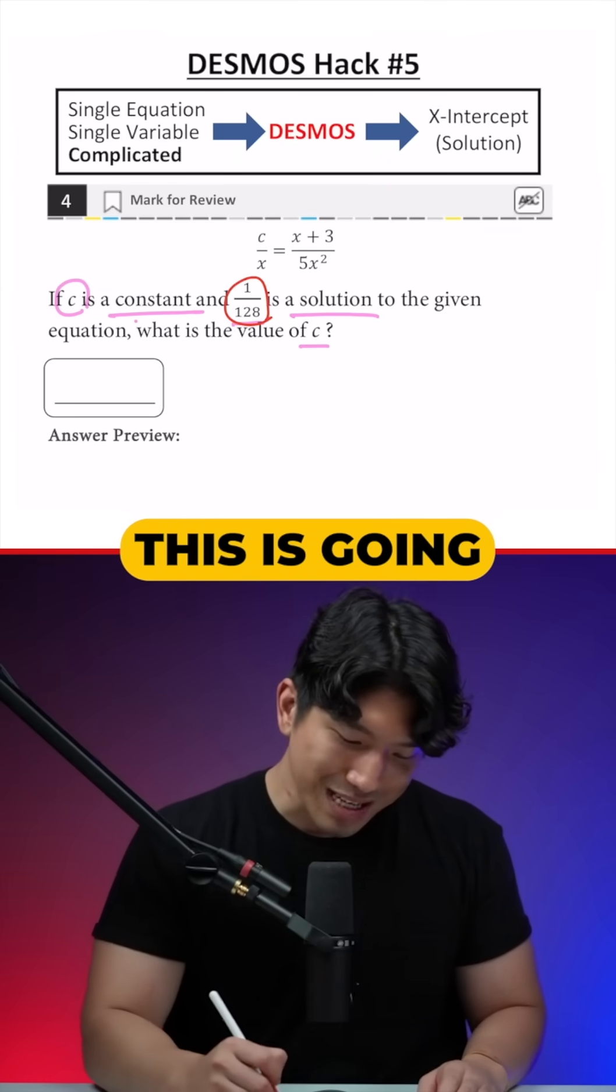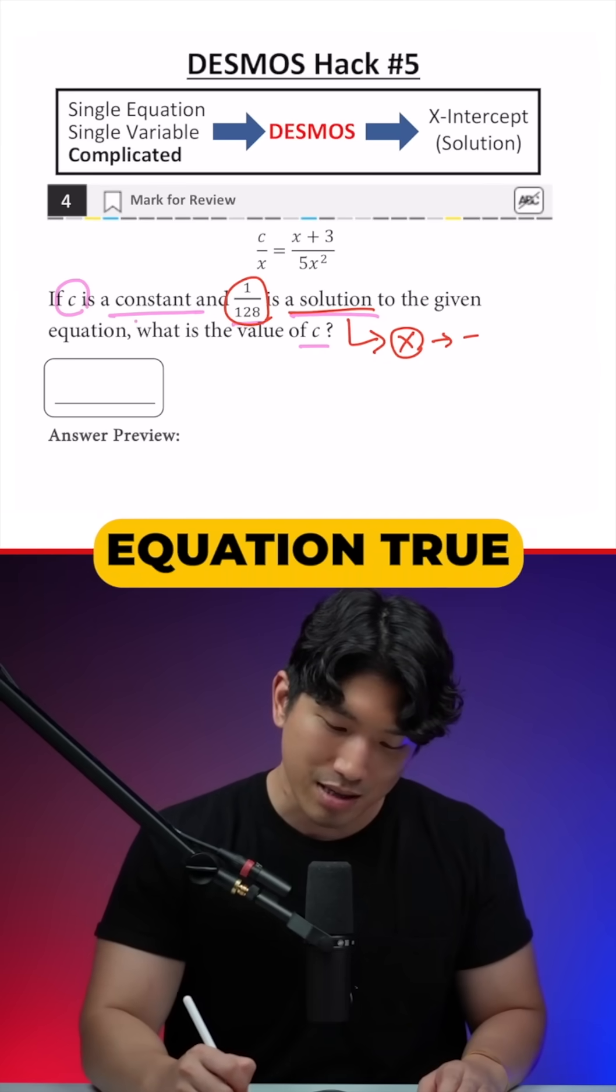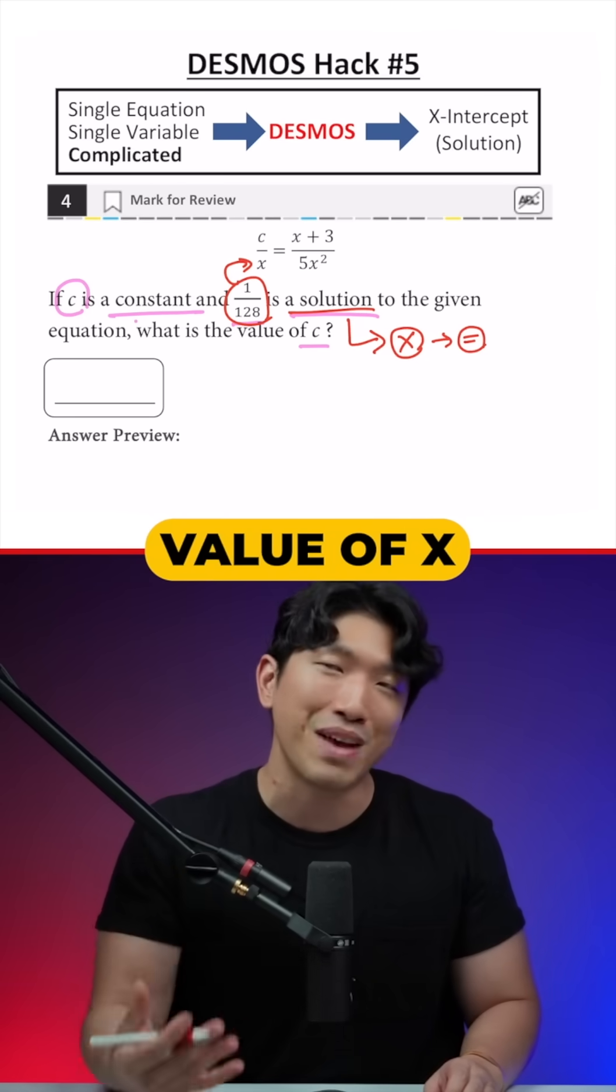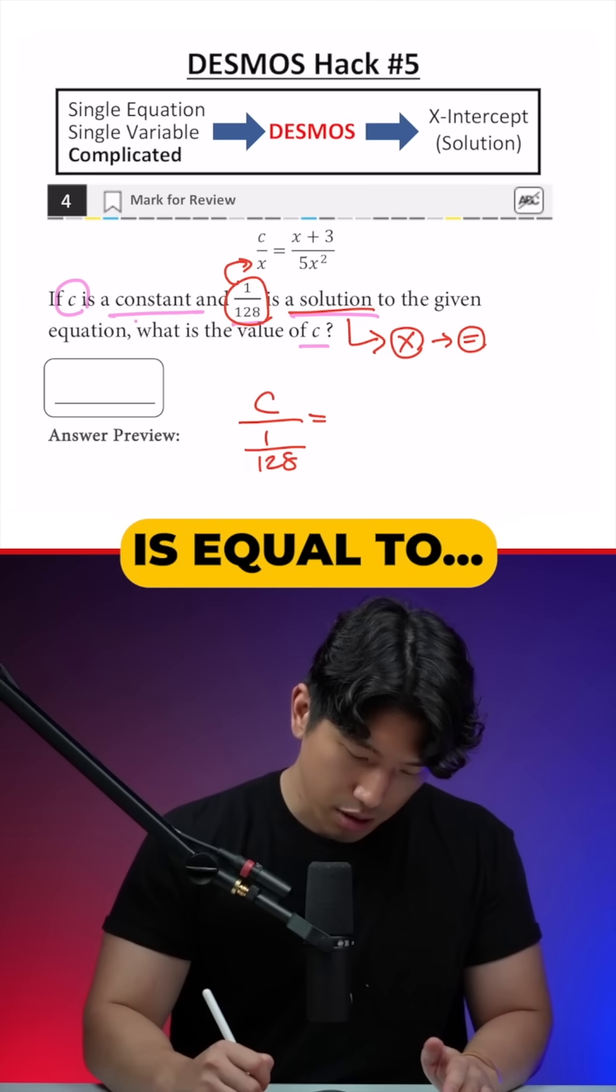So we know this is going to be a solution, and solution by definition is referring to the value of X that makes the equation true, which then allows us to plug this in for the value of X, which means we're going to get C over 1 over 128 is equal to...